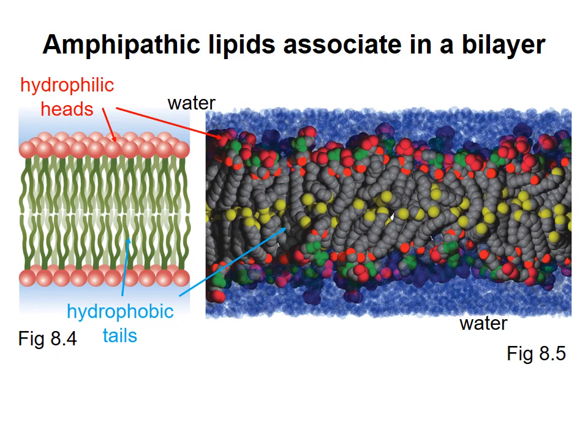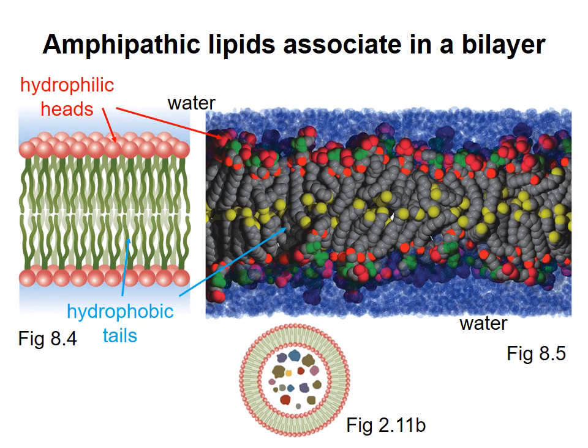Now if the bilayer stayed as a flat sheet, the hydrophobic groups would be exposed to water on the edges. To prevent that, the bilayer curves around to form a sphere, enclosing water inside it. This type of structure is the basis for biological membranes.